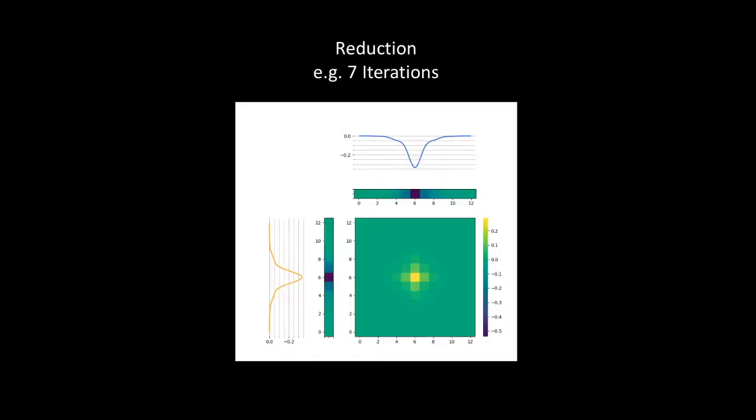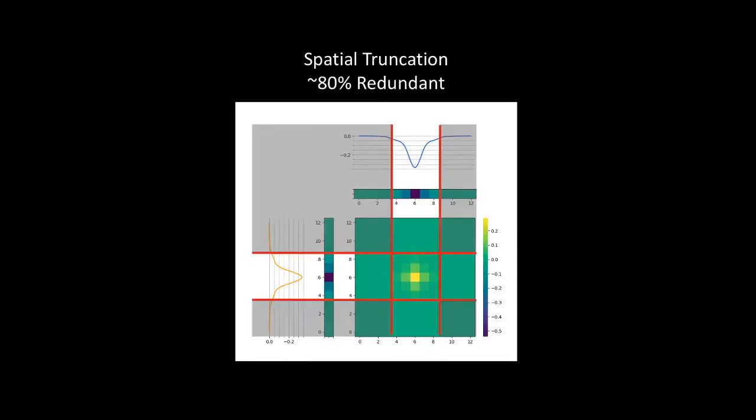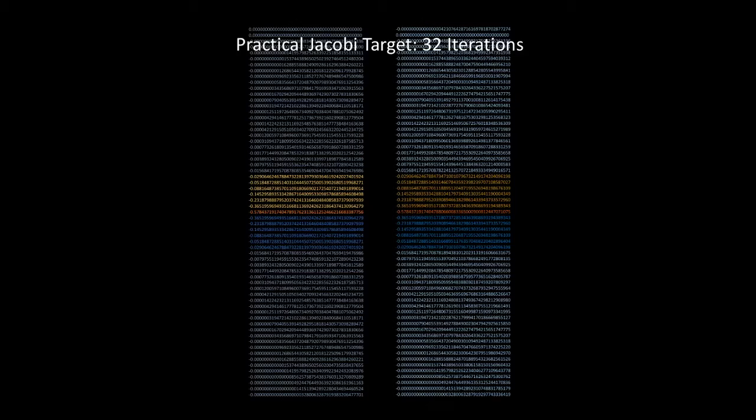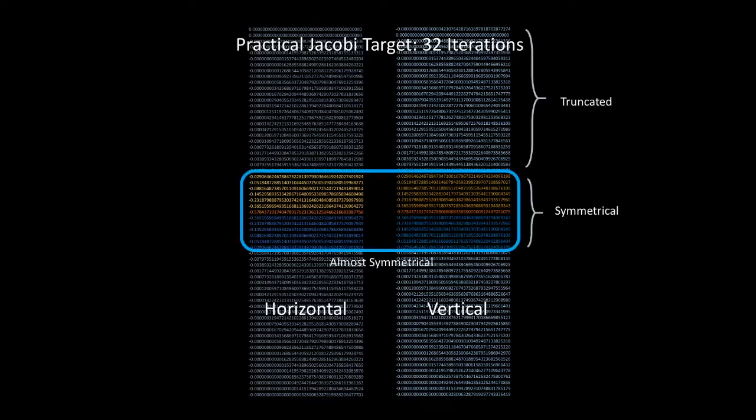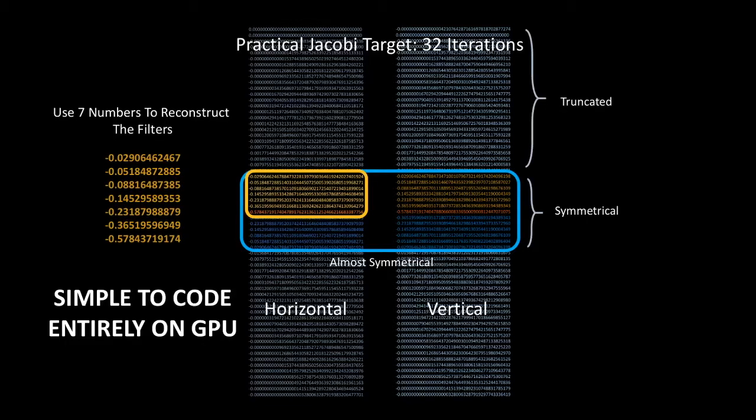Is that all? No. It turns out we can do more. If you look at the filters, you can see about 80% of the values are very small, so we can further reduce the filter size by truncating them. So for example, for Jacobi 32, what we have now are two convolution filters, one horizontal and one vertical, where most of the numbers are truncated. The interesting thing is, the remaining parts are very much symmetrical, so all we need to do is using these seven numbers in our shader code for the Poisson pressure.